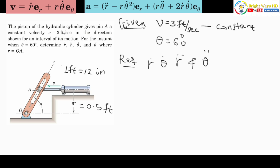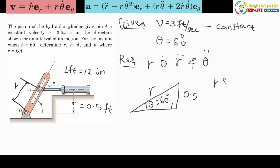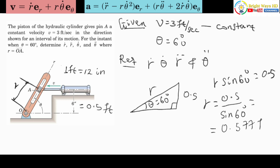Now let's find the radius r of point A from O. This can be evaluated from the triangle: if theta is 60 degrees and the perpendicular side is 0.5 feet, then r times sine 60 degrees equals 0.5. That means r equals 0.5 over sine 60 degrees, which gives r equals 0.577 feet. This is the r parameter for this position.